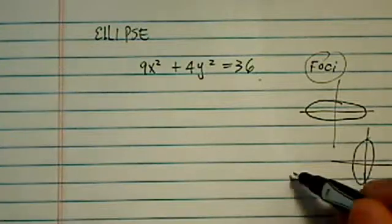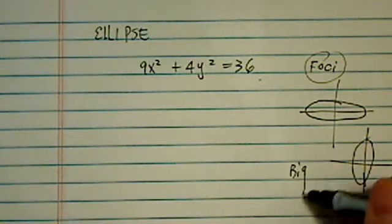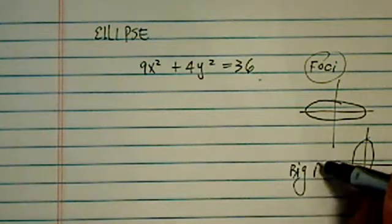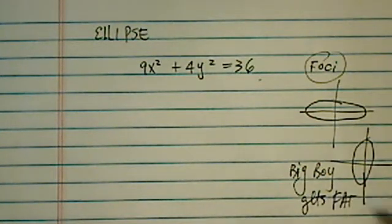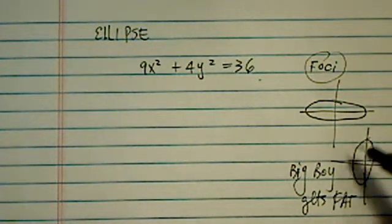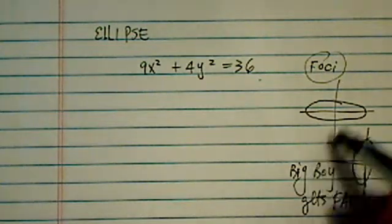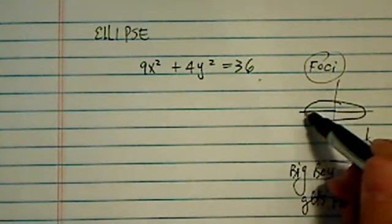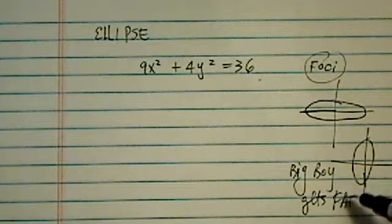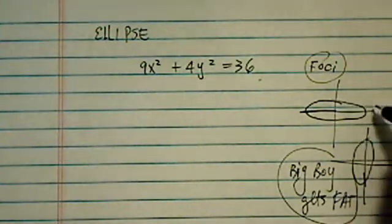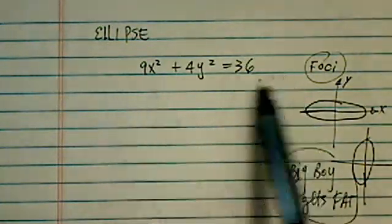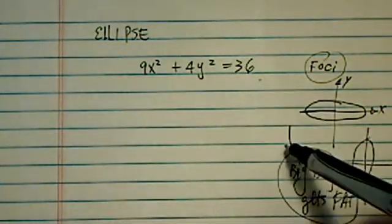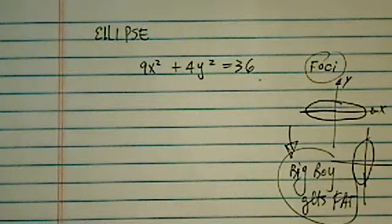Well, you know, the easiest one, actually, to remember is the big boy gets fat. Sounds funny, but here's the thing. Whichever axis has the largest coefficient on the bottom is the one the ellipse elongated on. Now, it may or may not make sense at this point, but let's simplify it, and we'll go along and see why this one makes sense.